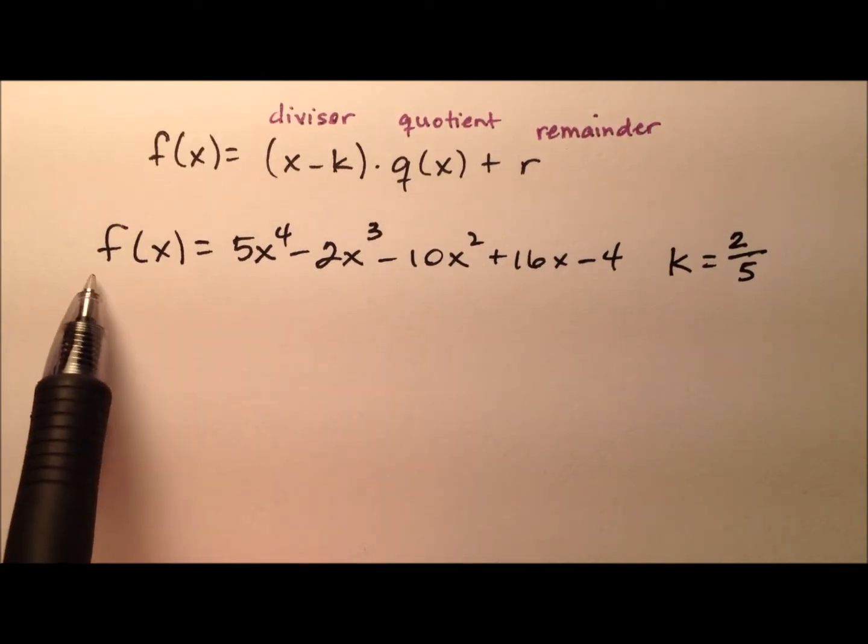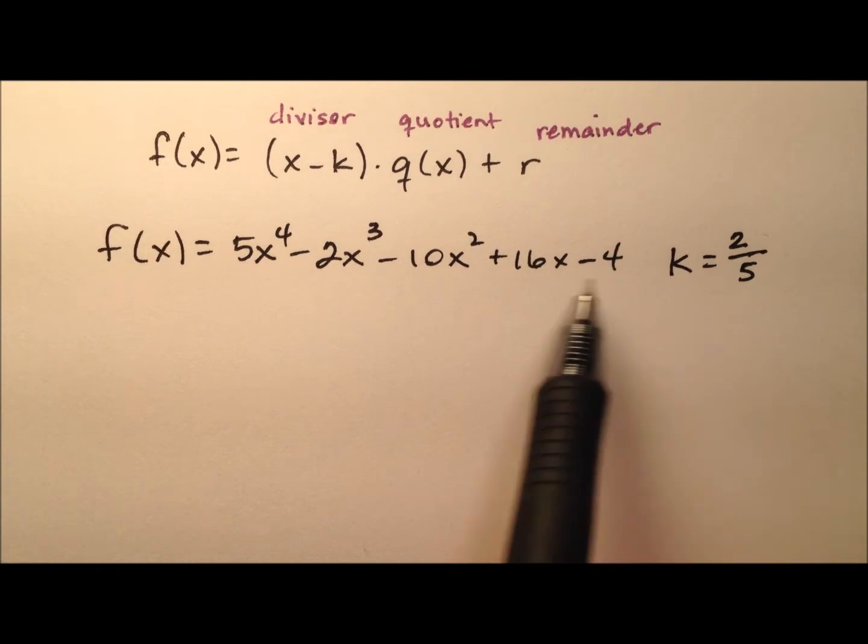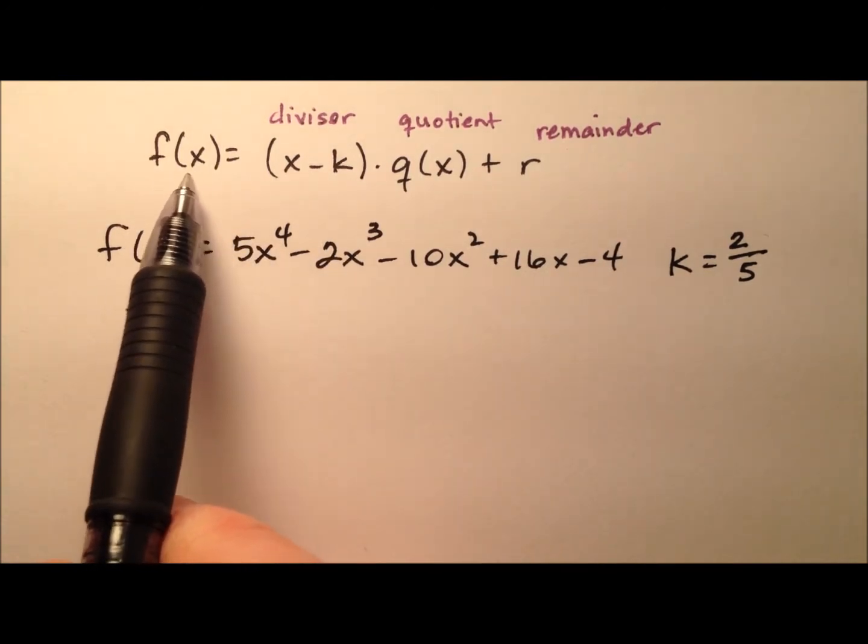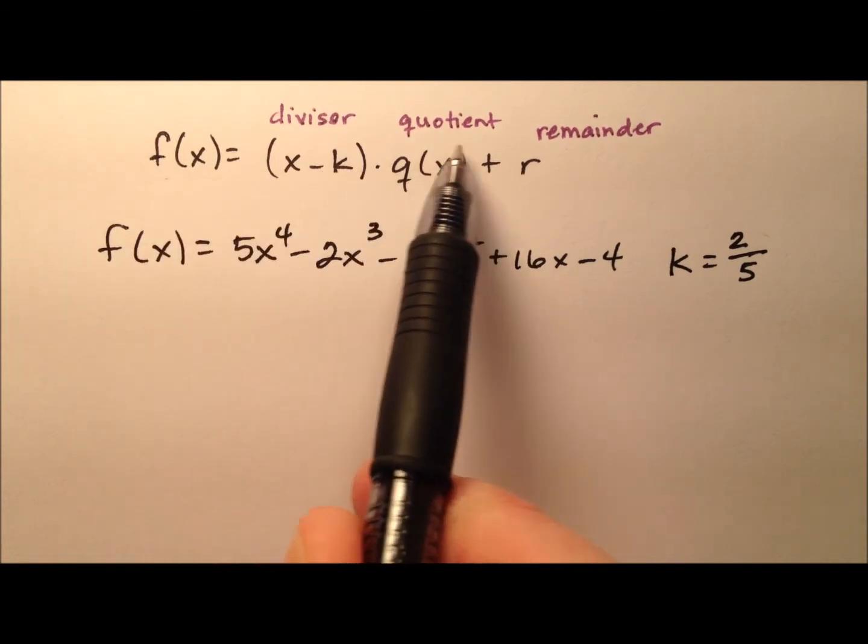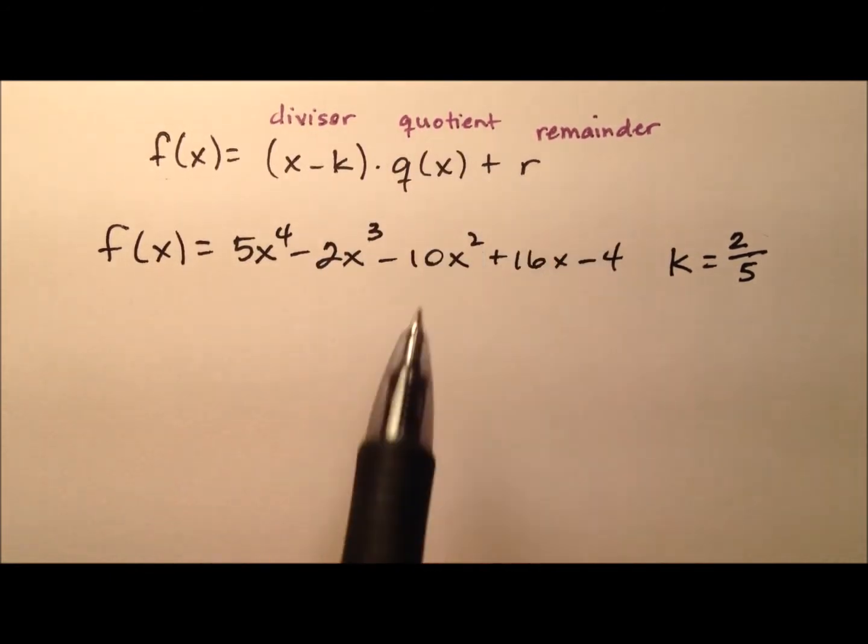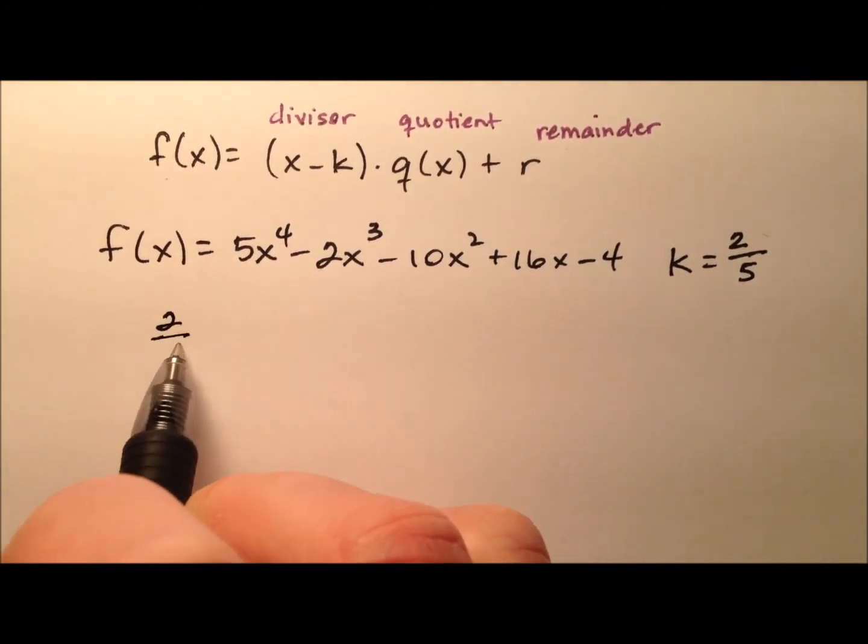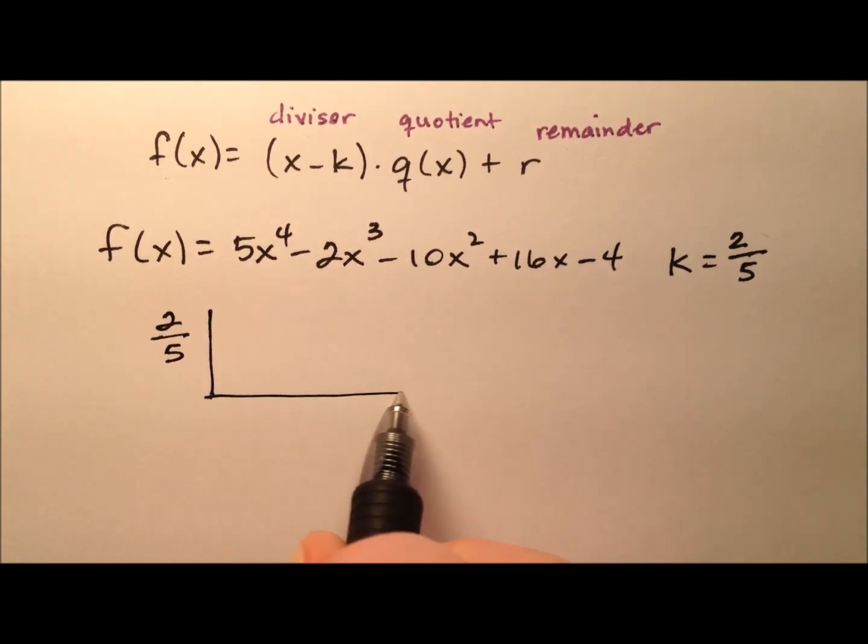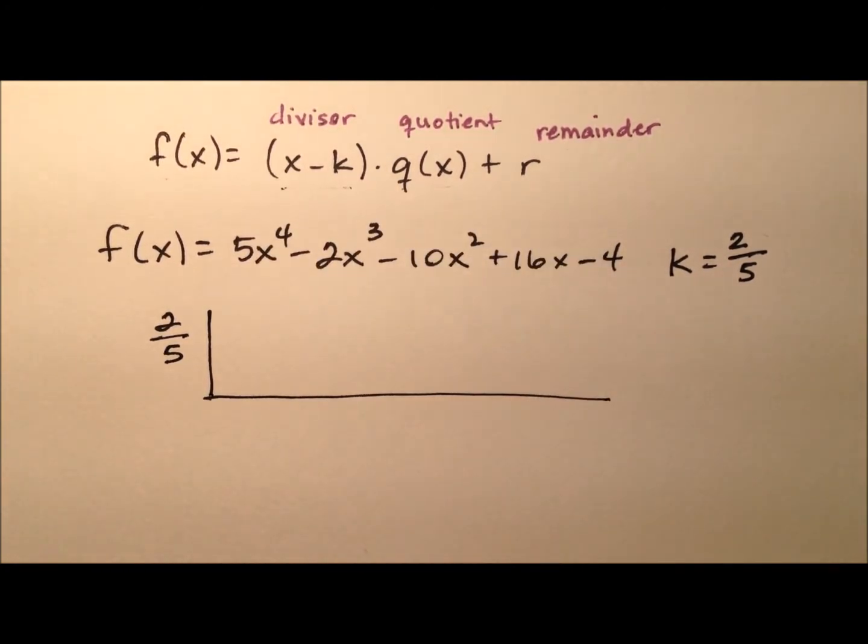In this example, we're given a function, we have a polynomial here, and we're given a value for k. What we want to do is take this polynomial function and divide it, breaking it down into the divisor times the quotient plus the remainder. Let's go ahead and use synthetic division. We'll take this 2/5, put it out front, and then work this division and write this polynomial in its form.